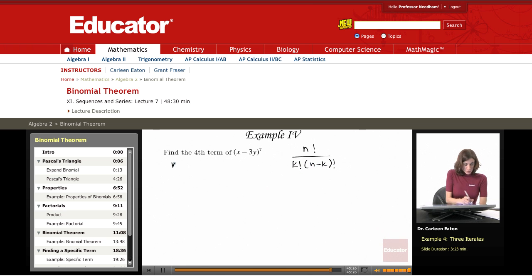All right, n equals 7. What does k equal? Well, it's the fourth term. k is going to be one less than that. 4 minus 1, I'm going to have k equals 3.